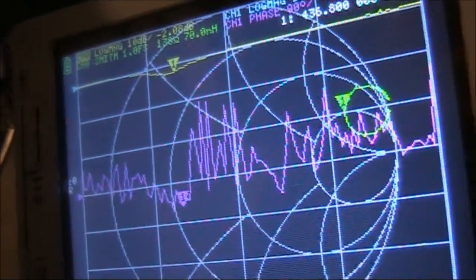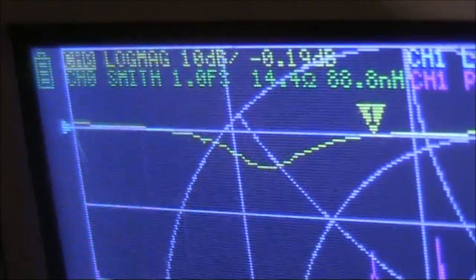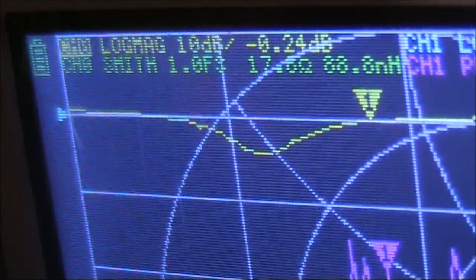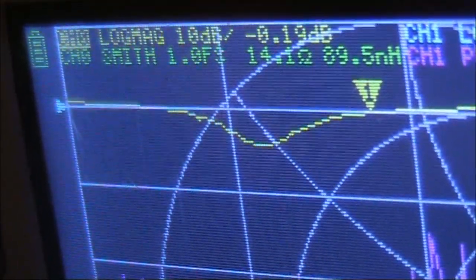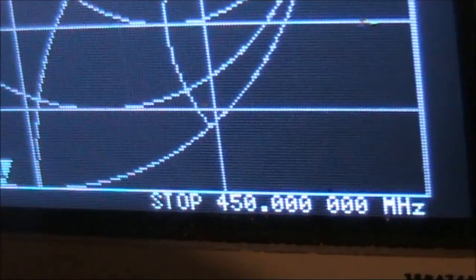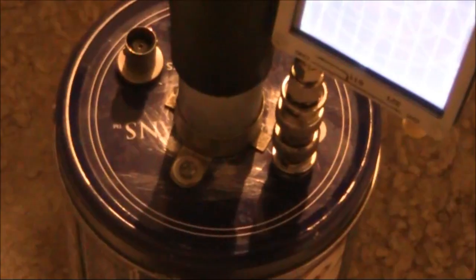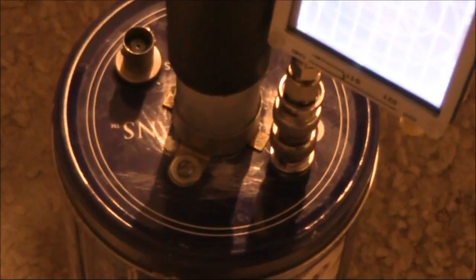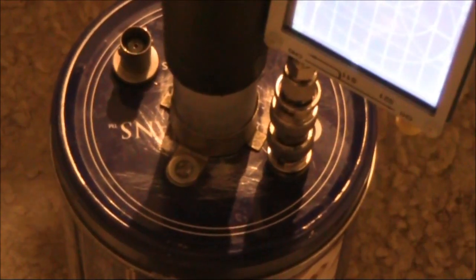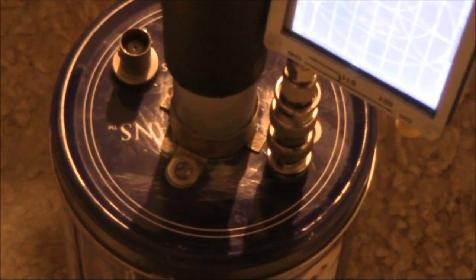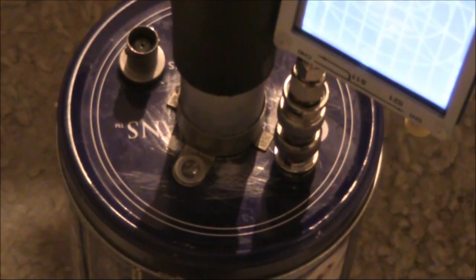Here's a look on the Nano VNA. I've made some small changes to the coupling loops, and the dip is deeper. Another thing is that it varies when you wriggle the plunger, indicating there may be a poor connection. A proper cavity filter would be bolted or soldered to assure good electrical contact.